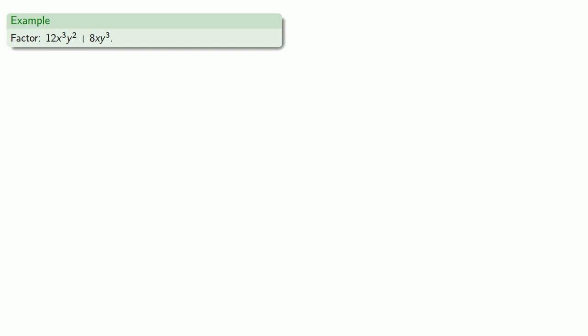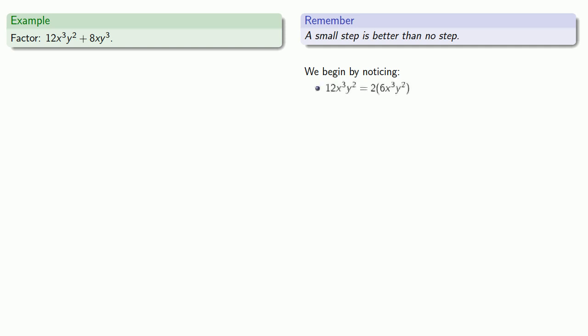The important thing to remember about factoring is that it's a very hard problem. In general, you'll have no idea where to begin. A small step is better than no step. Here we might begin by noticing both our coefficients are even, so both are 2 times something. 12X cubed Y squared is 2 times 6X cubed Y squared, and 8XY cubed is 2 times 4XY cubed. Both terms have a common factor of 2, and we can remove that.